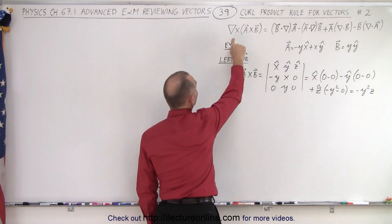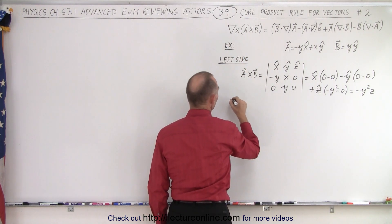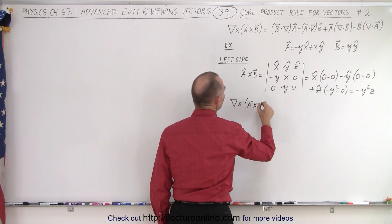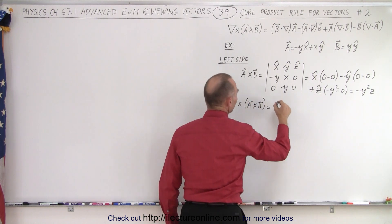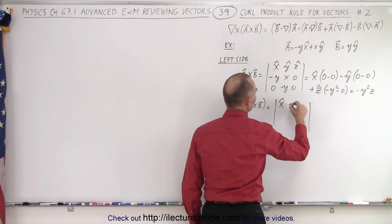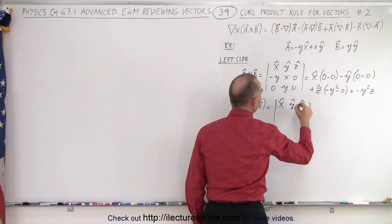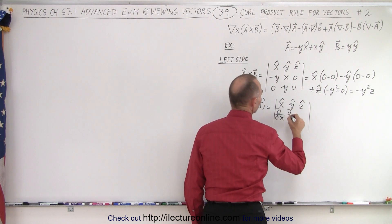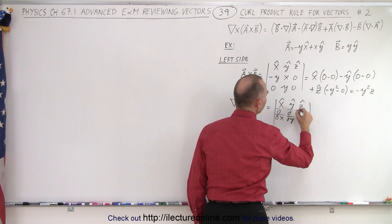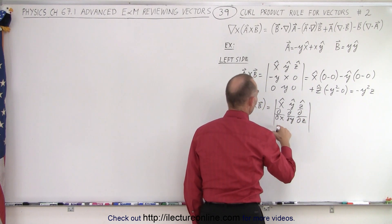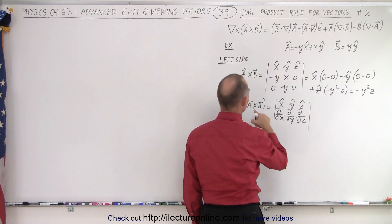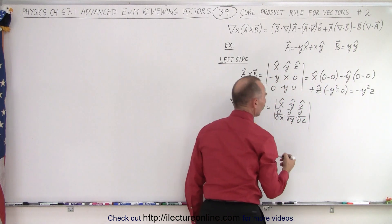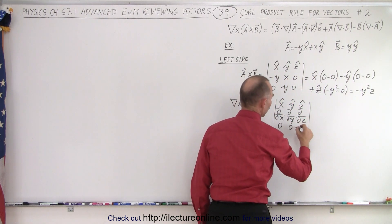Next, we want to take the curl of that. So the curl of the cross product of a and b is set up with the unit vectors x, y, and z; the partial derivatives with respect to x, y, and z; and then the components of the cross product, which are 0, 0, and minus y squared.